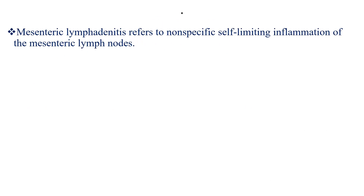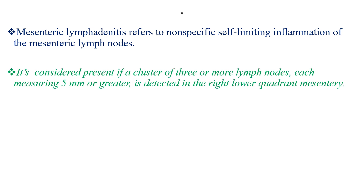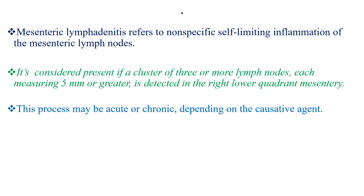Mesenteric lymphadenitis refers to any specific self-limiting inflammation of the mesenteric lymph nodes. It is considered present if a cluster of three or more lymph nodes, each measuring 5 mm or greater, is detected in the right lower quadrant in the center. This process may be acute or chronic, depending on the causative agent.